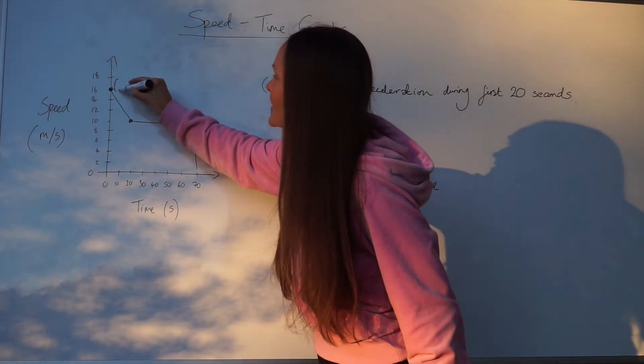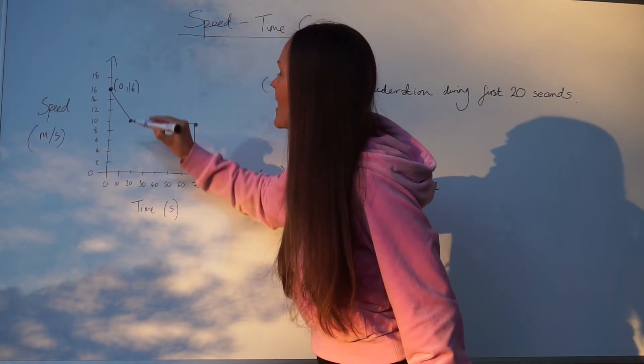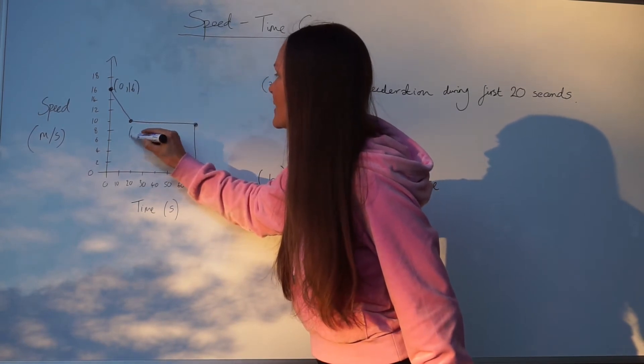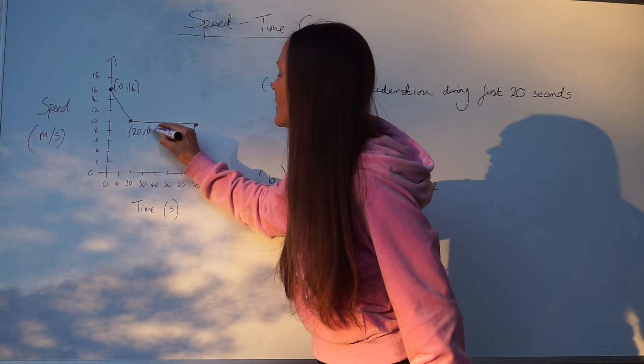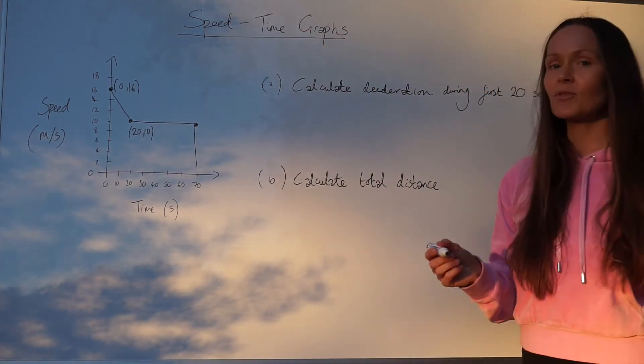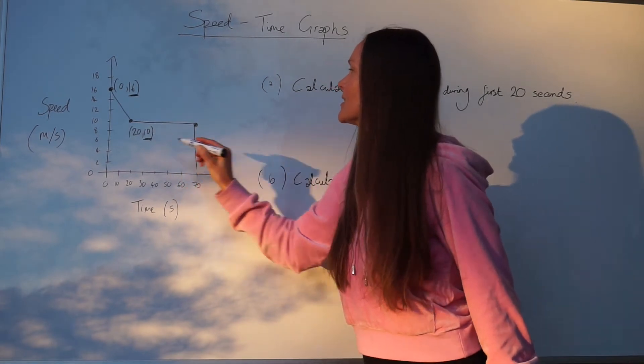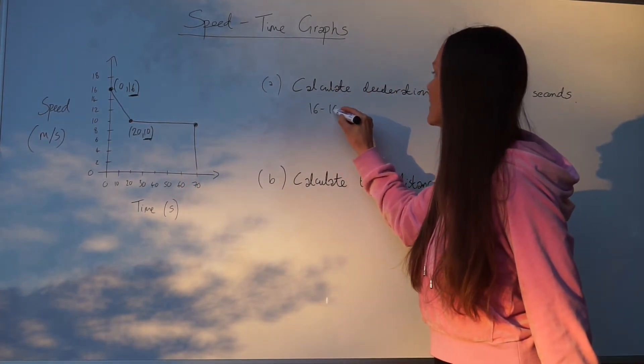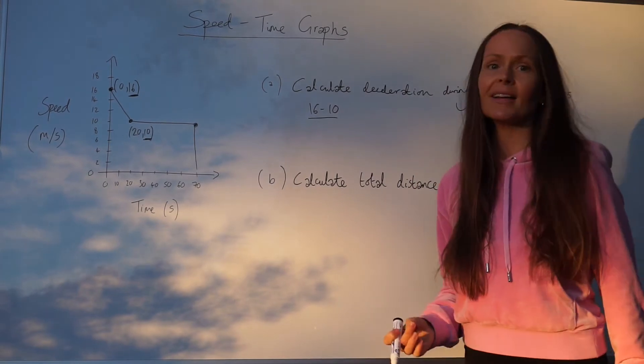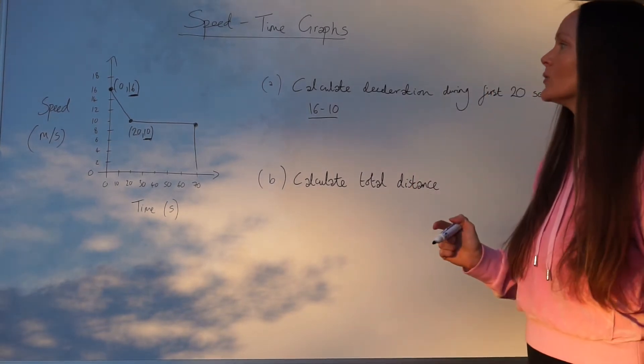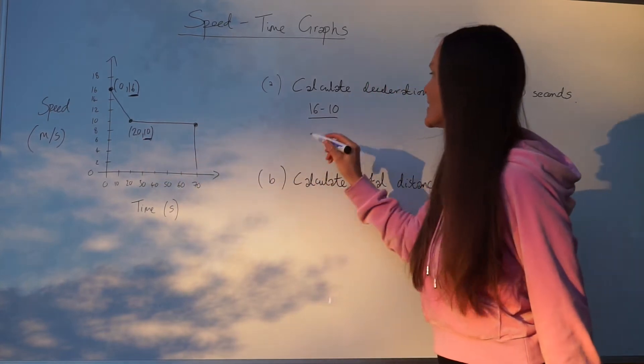This point lies at 0,16 and this point lies at 20,10. To work out the gradient, I need to subtract the y values. So I'm going to do 16 take away 10. Then I need to divide by the difference in the x values. So 0 minus 20.